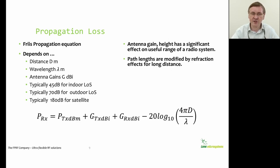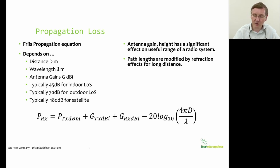The next thing to consider is the propagation loss, defined by Friis's propagation equation, which describes the effect of distance, wavelength and antenna gains on the received signal strength relative to the transmit signal strength. Typically you see something like 45 dB of loss for indoor applications, 70 dB for outdoor applications at a couple of kilometres, and about 180 dB of loss for satellite systems at around 25,000 kilometre orbit ranges.